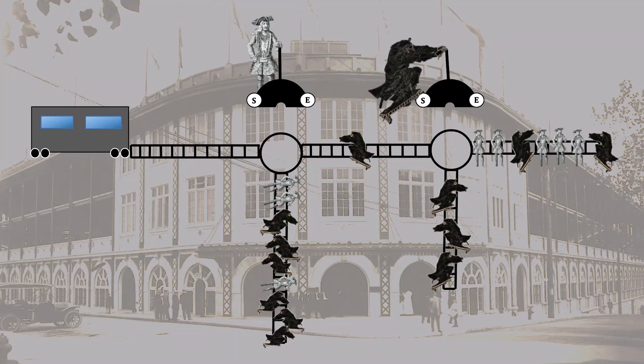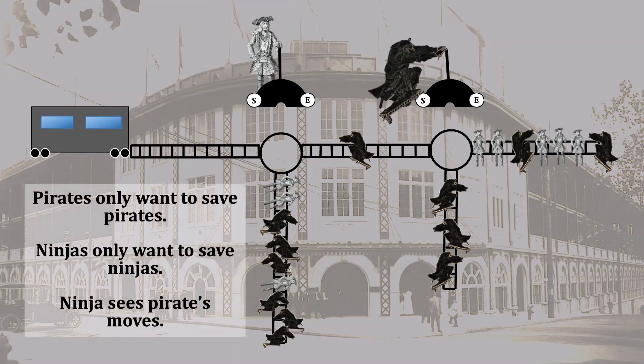Here are the details on the situation. Pirates only want to save pirates. Ninjas only want to save ninjas. And when the ninja moves, he sees what the pirate has previously chosen to do.